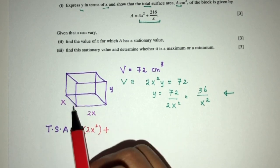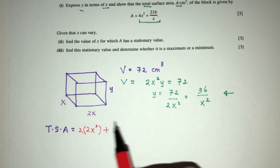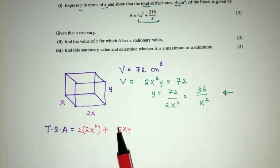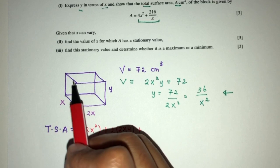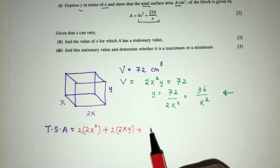Now plus we have this area, which is length times width, which will be 2xy. Now again, this area will be the same as the back one, so we have to times 2.